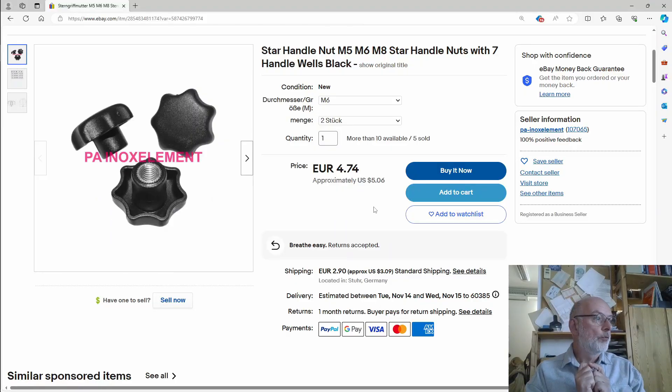And I hope these very cheap ones bought in Germany, probably also made in China, are a little bit better but we will see. Yeah, seems to work quite all right. I got those from eBay Germany but I'm showing you here the listing on eBay.com in English. The seller was PA-inox element, a PA stainless steel element. And it's a star handle nut, about five bucks plus about three bucks shipping.